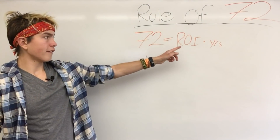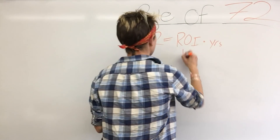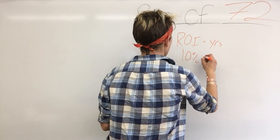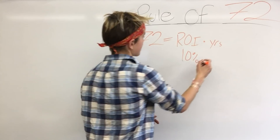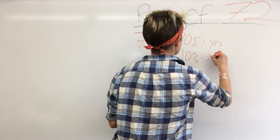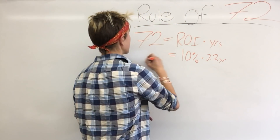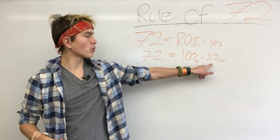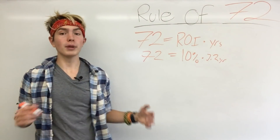So if your return on investment is 10%, it's going to take you 72 divided by 10, which is 7.2 years to double your money. So it's going to take you 7.2 years with a 10% rate of return to double your money.